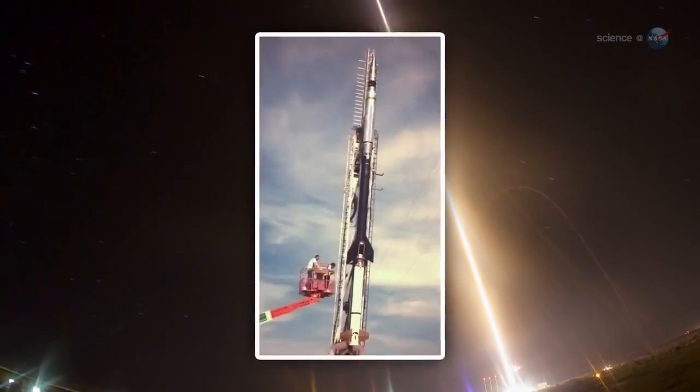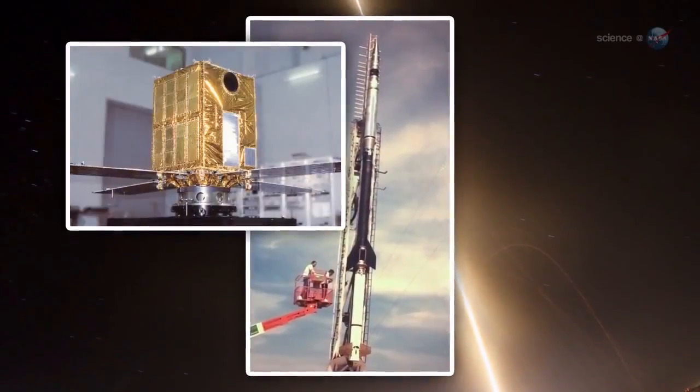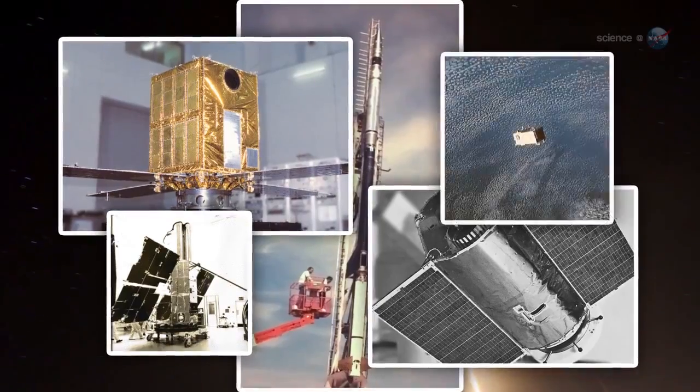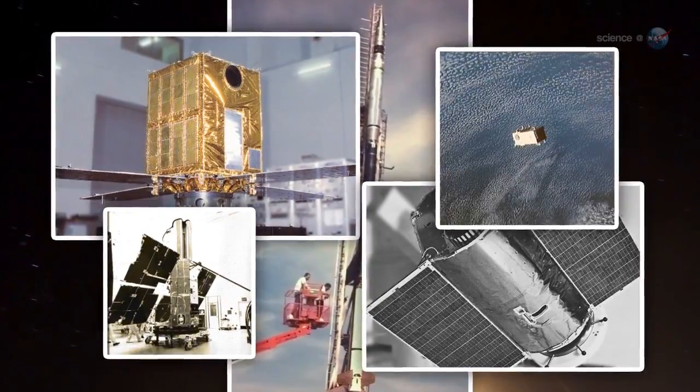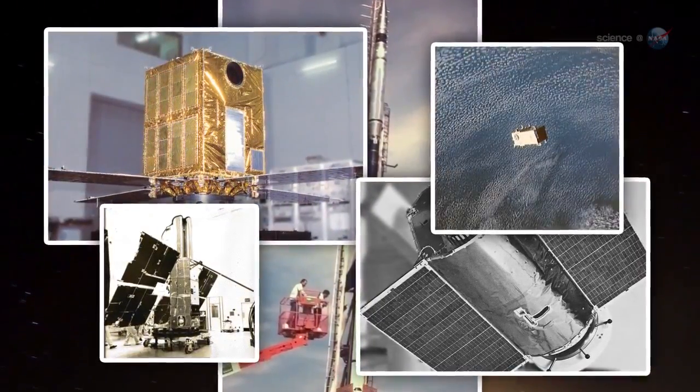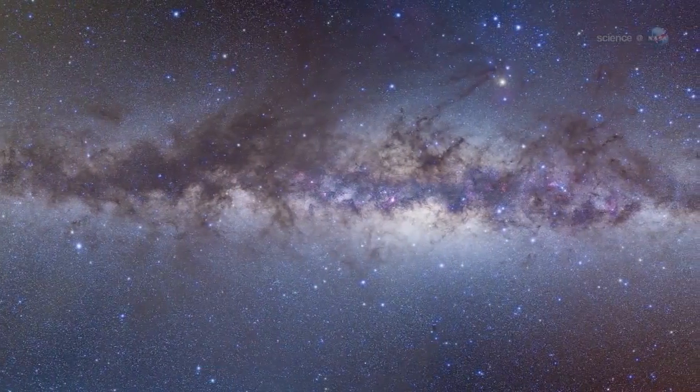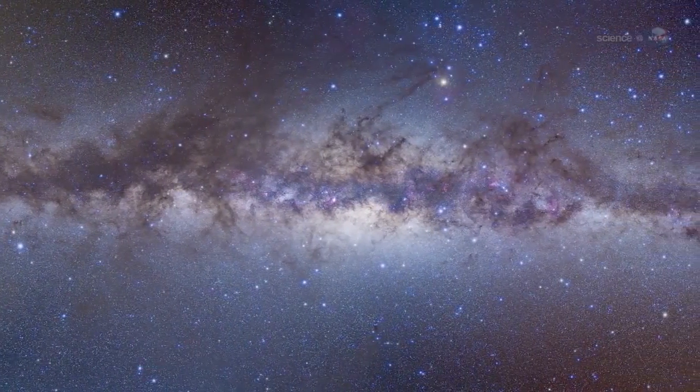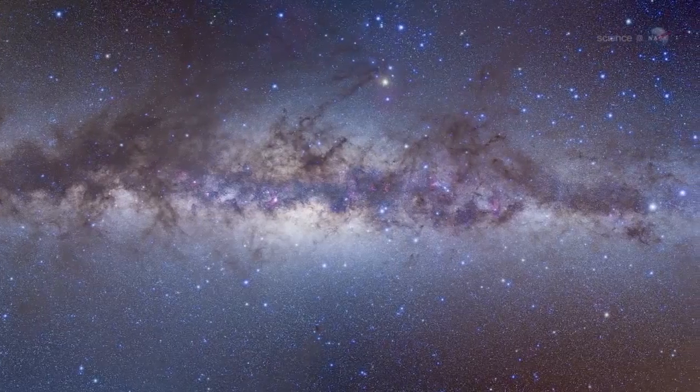X-ray astronomers were getting their first look at the sky using sounding rockets and orbiting satellites, which revealed a million-degree X-ray glow coming from all directions. It all added up to Earth being inside a bubble of hot gas blown by exploding stars.